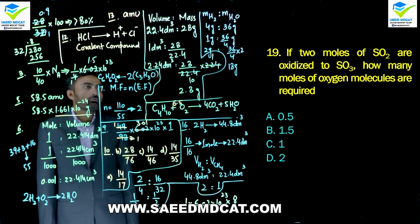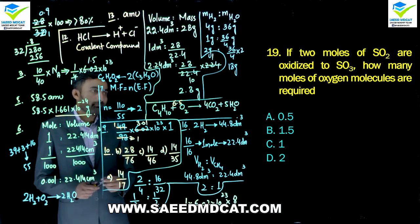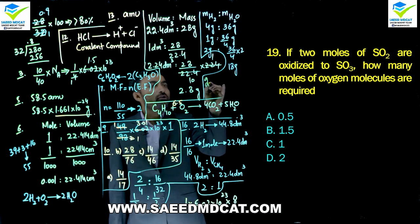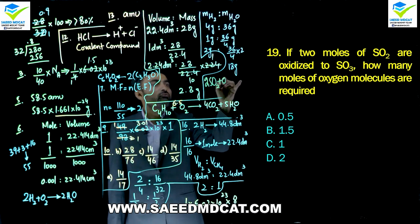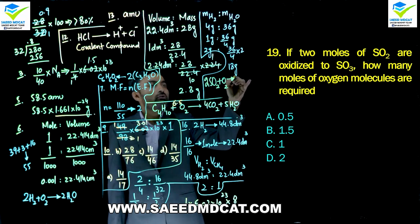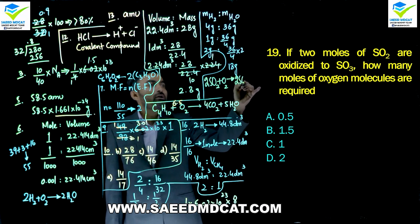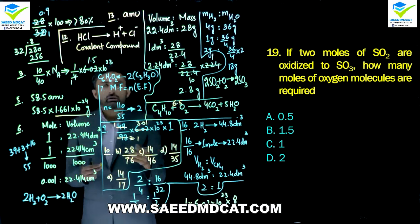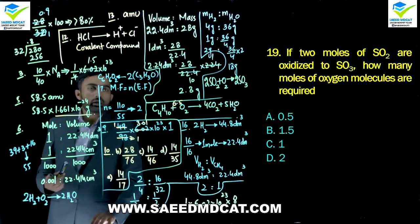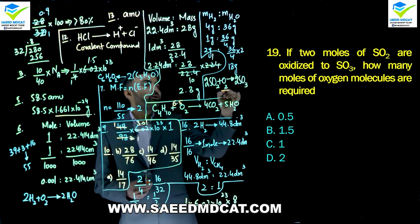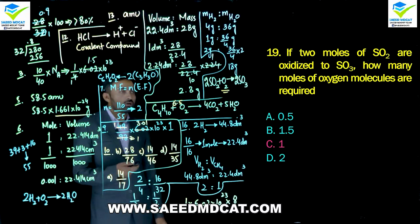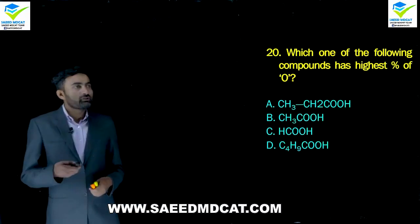Question 19: If 2 moles of sulfur dioxide are oxidized to sulfur trioxide, how many moles of oxygen molecules are required? Balanced equation: 2SO2 + O2 → 2SO3. So 2 moles SO2 consume only 1 mole O2. Charlie option (1 mole) is correct.